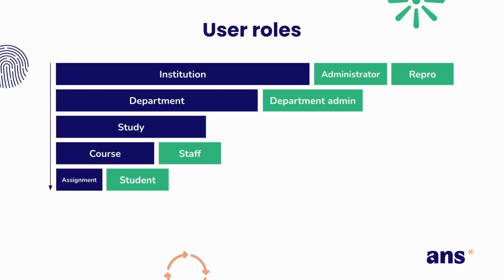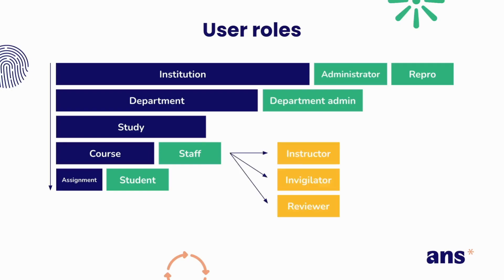We now dive further into the staff members. The green roles you can see here are institution-level roles. The yellow roles are course-level roles. A staff member can be an instructor, an invigilator, or a reviewer in the course. An instructor is the coordinator of the course, an invigilator is there to digitally invigilate the taking session of a test, and the reviewers are there to help review the results.